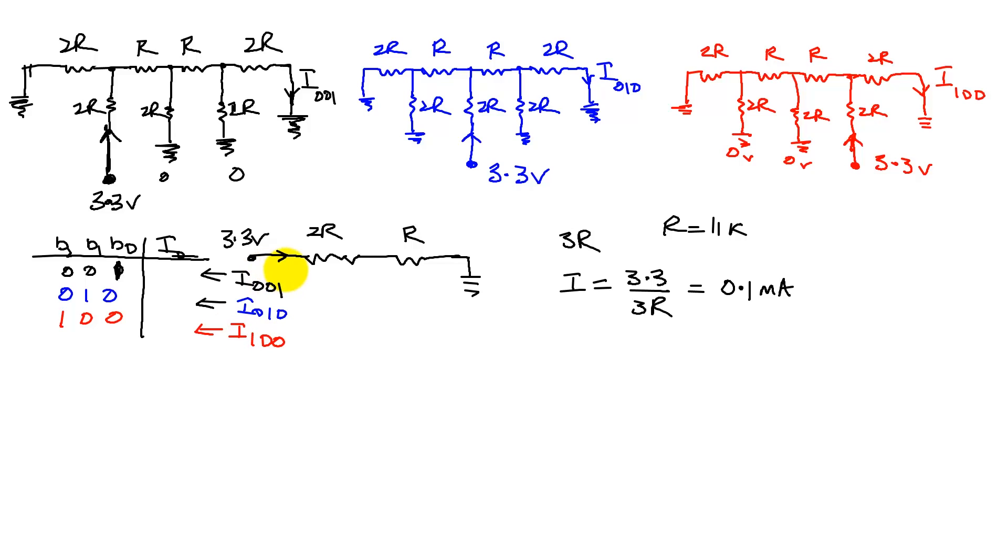We can calculate this by looking at, for example, how I001 gets calculated. We have I01 coming out of here, which we know is this. It gets split. And it gets split in 2R. And this net resistance is also going to be 2R, so it splits halfway. So half goes here, half goes here.